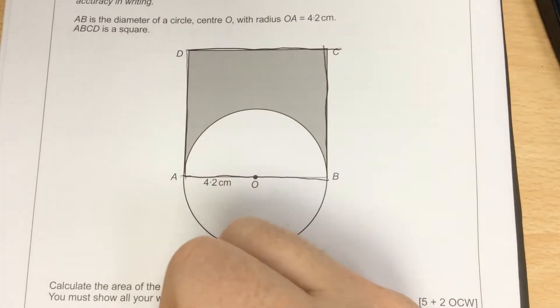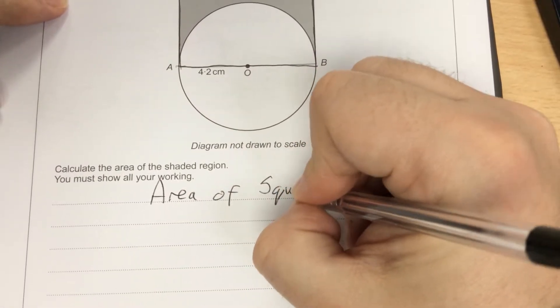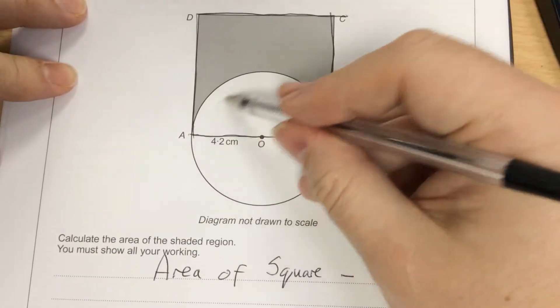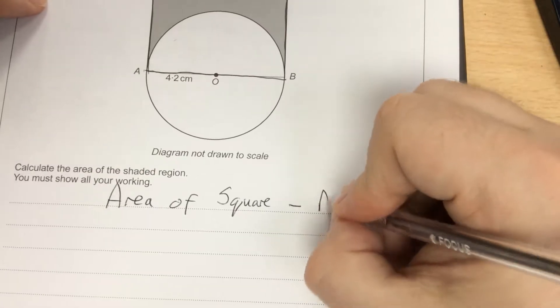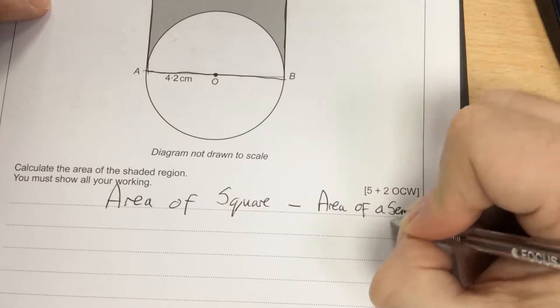So if I work out the area of the square, and then take away the half circle that has been cut out - and half a circle is called a semi-circle.